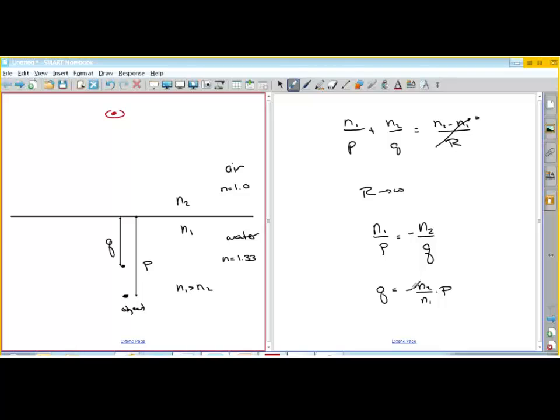And notice that this isn't an inversion. This is just about where the object is relative to the image. And you can see that if n2 is less than n1, then it looks like q is going to be smaller than p. It looks closer. Okay. So that's pretty much it for cases of a flat surface.